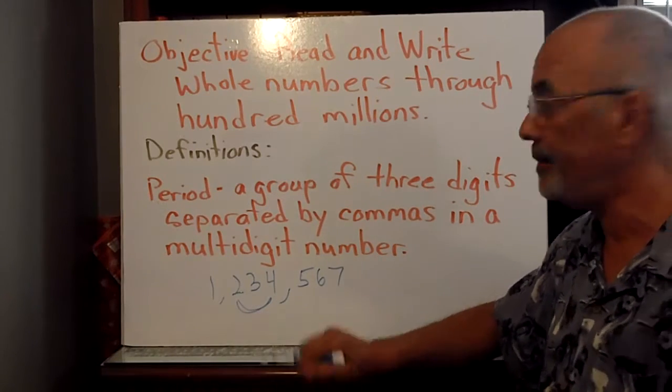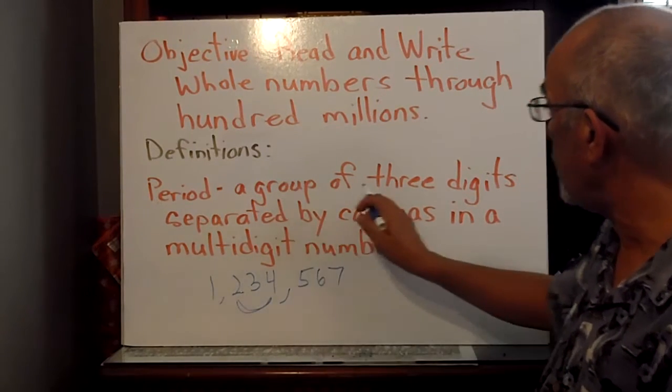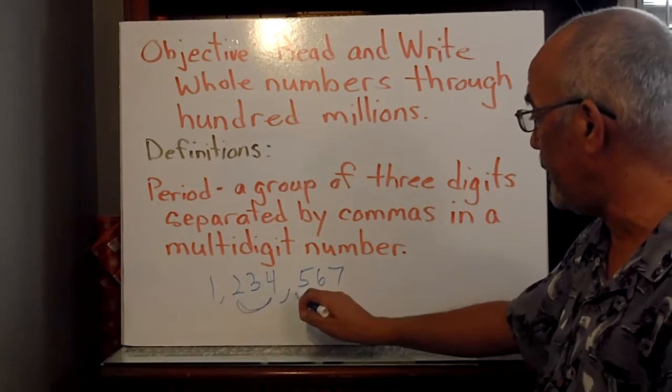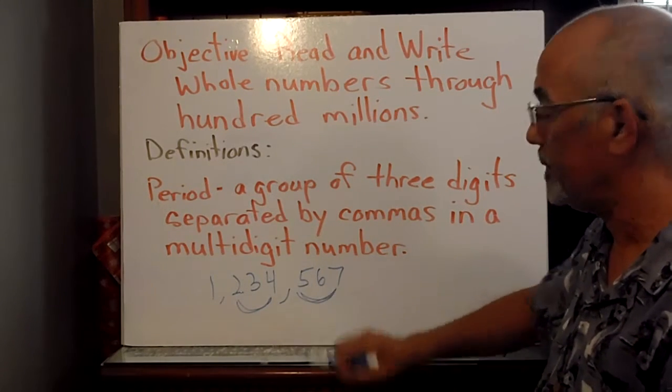This is one period. It's a group of three digits. One, two, three. This is another period.